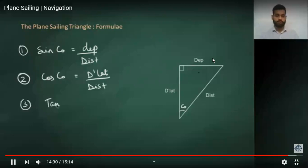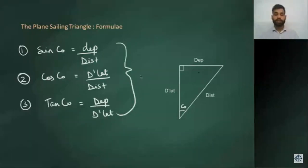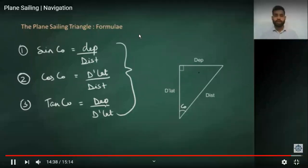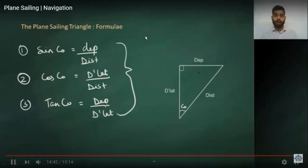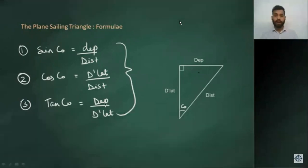From right angle triangle formula, we can put in the formula: sine course equals departure upon distance, cos course equals d lat upon distance, and tan course equals departure upon d lat. That's all about plane sailing, then we can solve the questions.